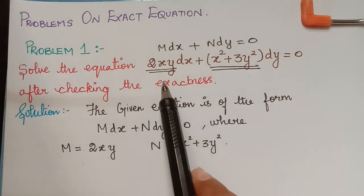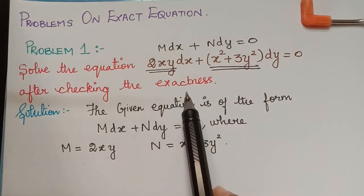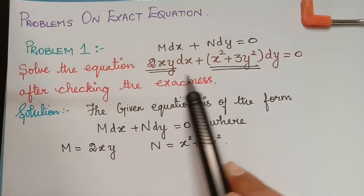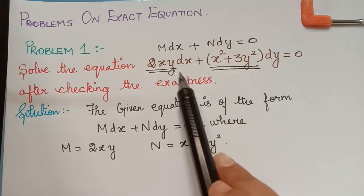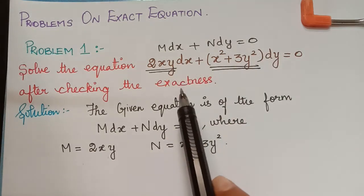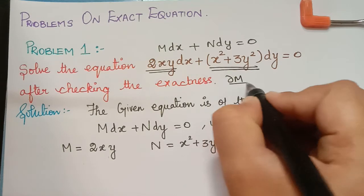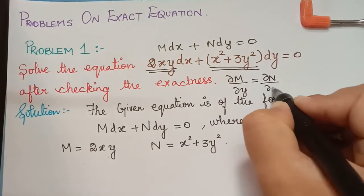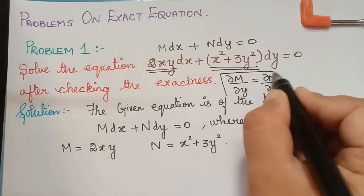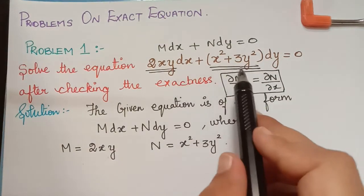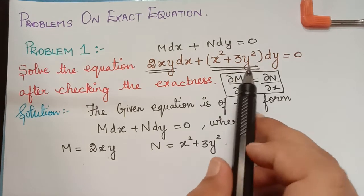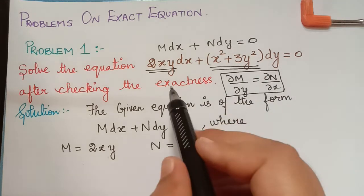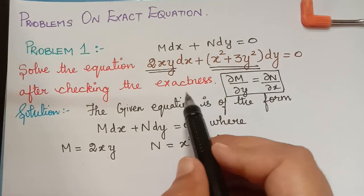We have to first check the exactness of this equation and then solve it. The necessary and sufficient condition for an equation of this type to be exact is that ∂M/∂y equals ∂N/∂x. If this condition is satisfied, the given equation is said to be exact.